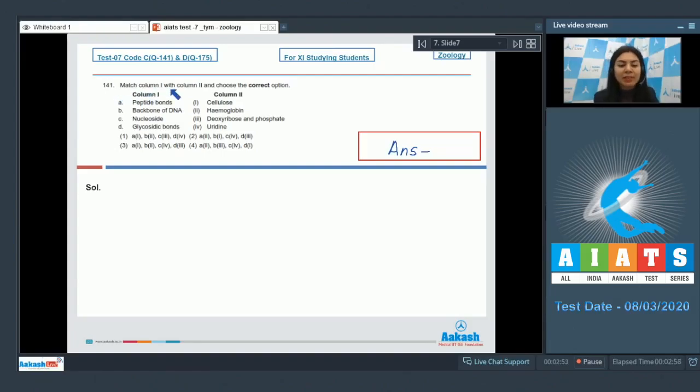Question 141: Match column 1 with column 2 and choose the correct option. Column 1 includes peptide bonds, backbone of DNA, nucleoside, and glycosidic bonds. Column 2: cellulose, hemoglobin, deoxyribose and phosphate, uridine. In column 1, option A, peptide bond...